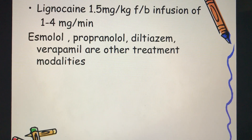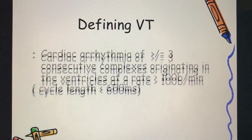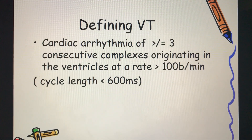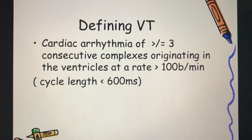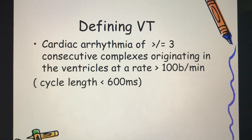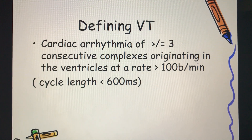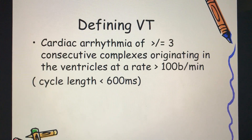Treatment options for VPCs include lignocaine, esmolol, propranolol, diltiazem, and verapamil. Coming to ventricular tachycardia, it is a cardiac arrhythmia having more than three consecutive complexes originating in the ventricles at a rate of more than 100 beats per minute.